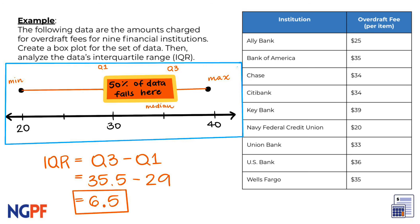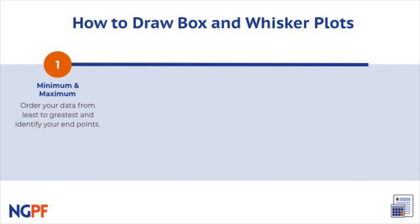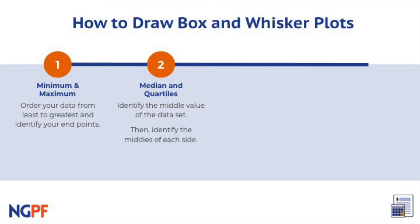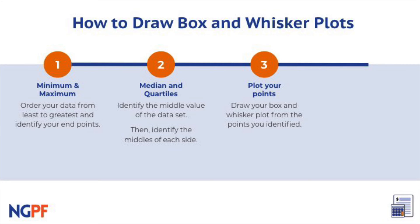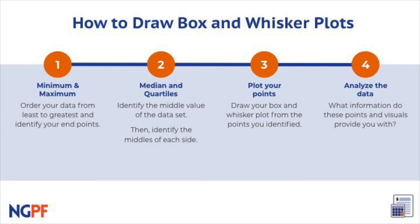Some researchers use the IQR to identify a data point as an outlier if it lies outside of the box. Here's a recap: after ordering your data set from least to greatest to identify your endpoints, you can identify the median and first and third quartile points. Then you can draw your box and whiskers to give you a nice visual of the data, which you can then analyze to see where most of the data lies and how spread out it is.